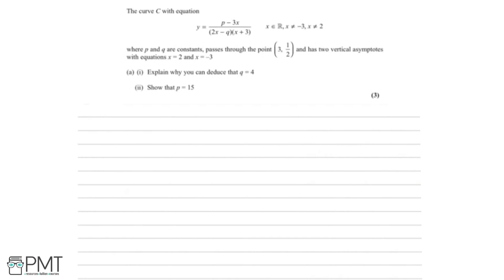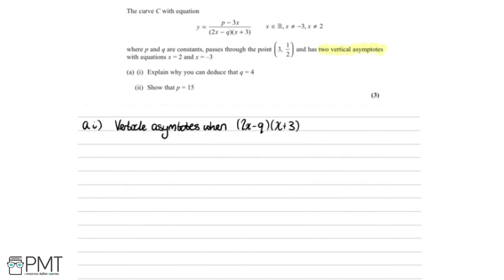In part A we need to explain why we can deduce that q equals 4. The key information is that we have two vertical asymptotes. You get vertical asymptotes when the denominator equals 0, because if you try to divide by 0 you can't, so it creates asymptotes. This means vertical asymptotes occur when the denominator 2x minus q, multiplied by x plus 3, equals 0.